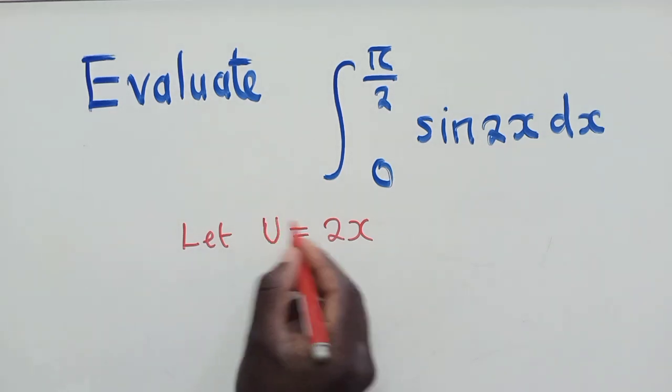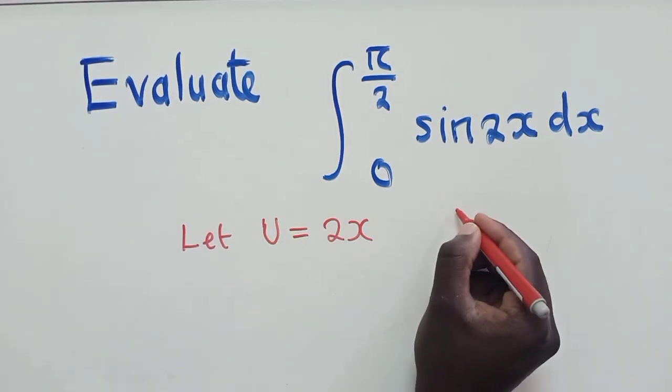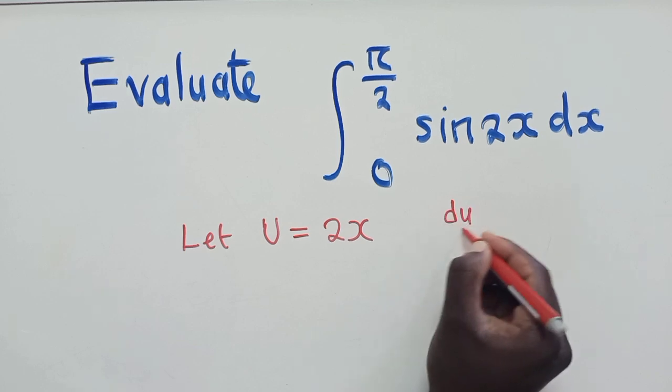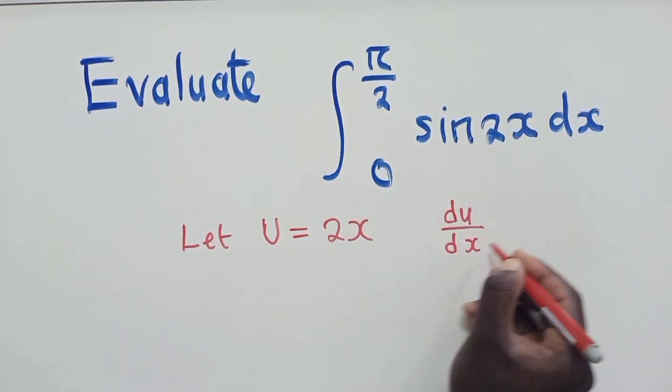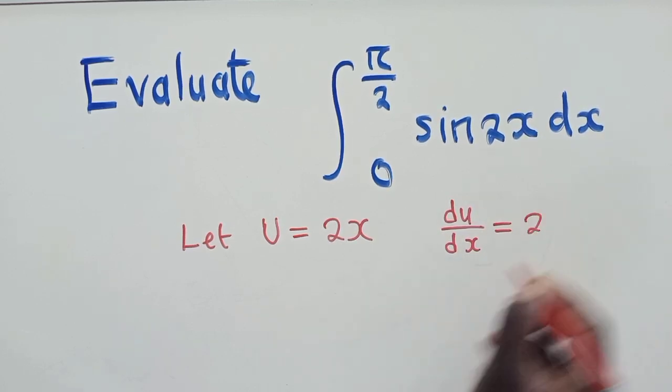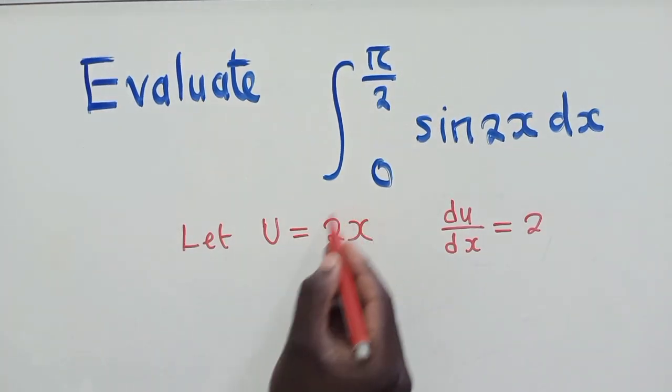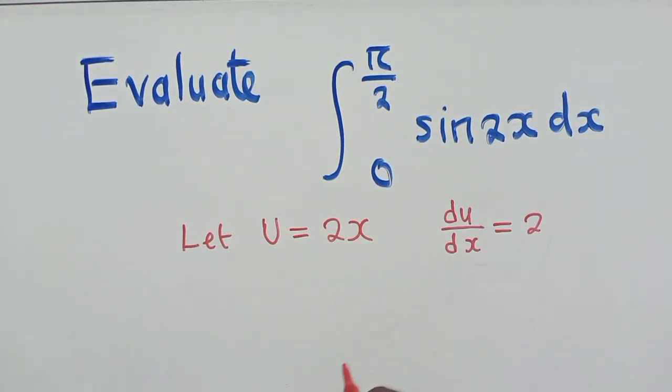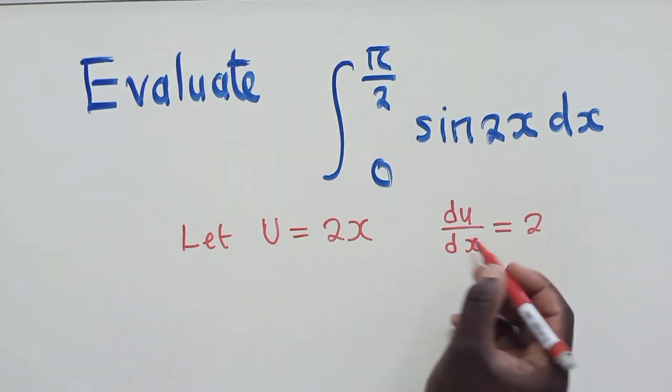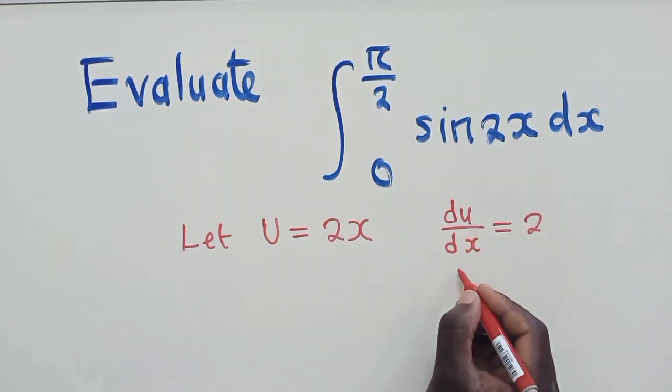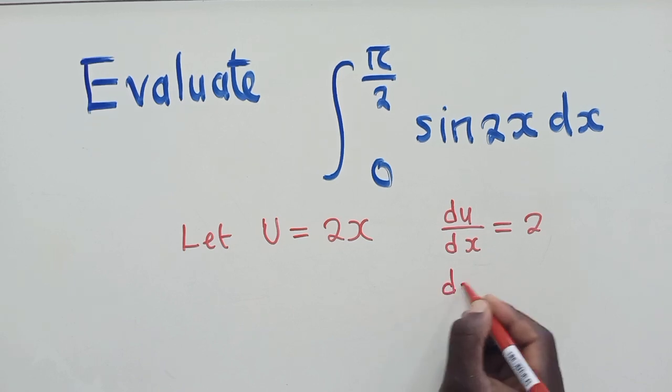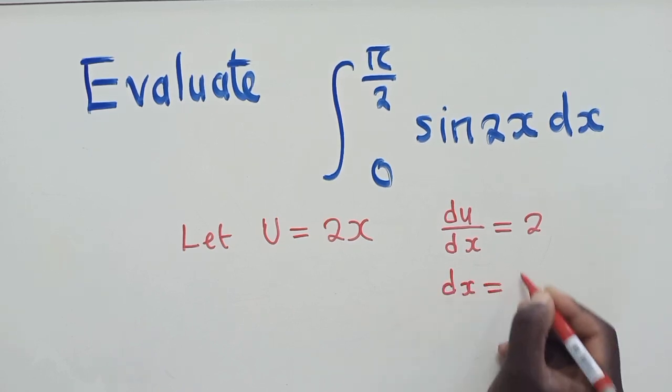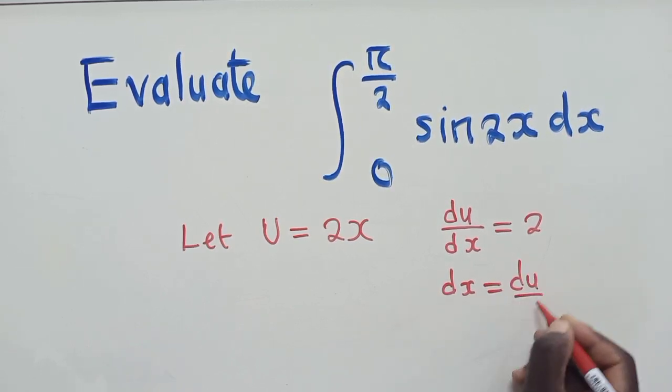After we've done this, we now say du/dx will be equal to 2. We now find the derivative of this. That's step number 2. After we've found the derivative, we now make dx subject of the formula. So it will be dx is equal to du over 2.